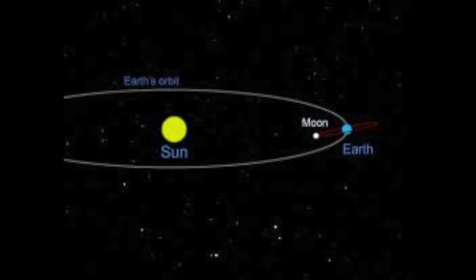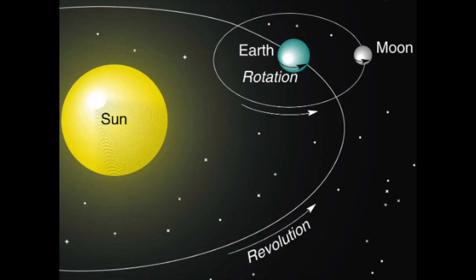In this next graphic, you will notice the relationship of the earth, sun, and moon. This is showing that the moon revolves around the earth and together they revolve around the sun. This is why we see the phases of the moon, because it takes approximately 29 days for the moon to revolve around the earth, and for the earth to revolve around the sun is 365 days.